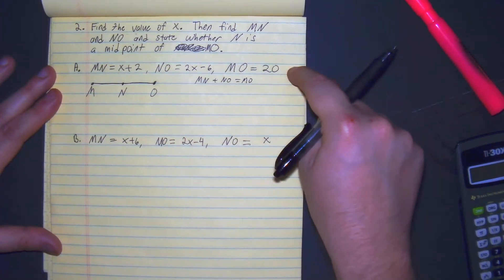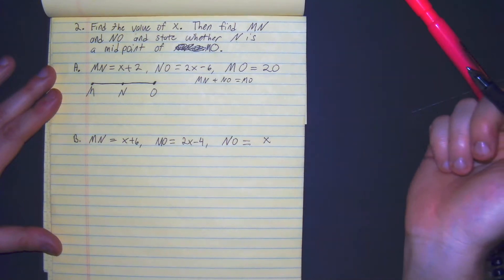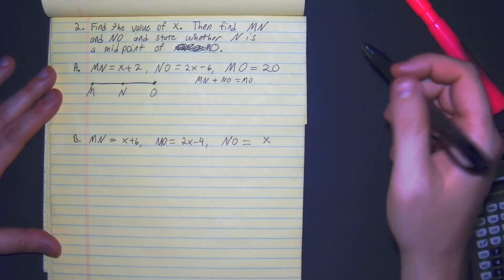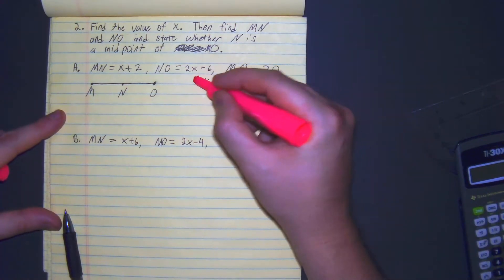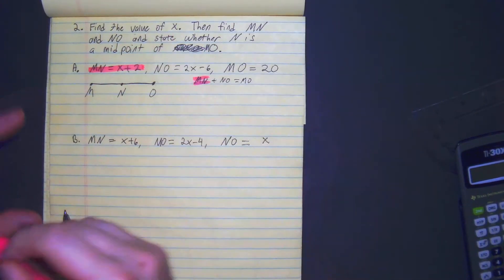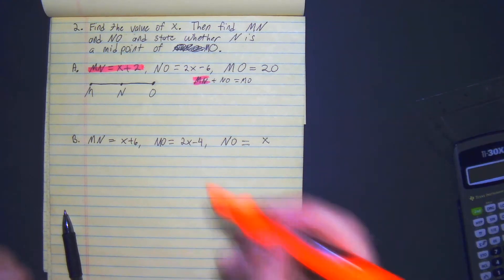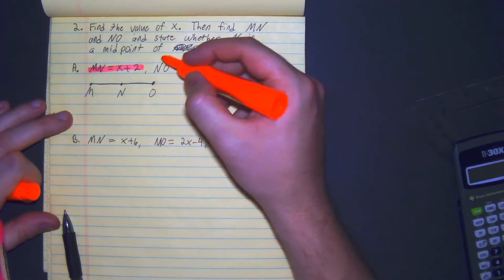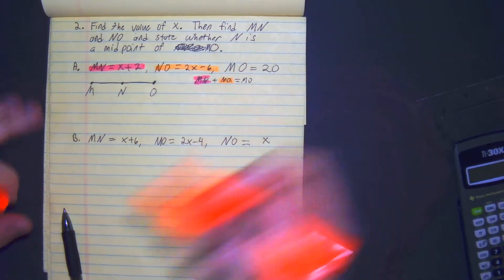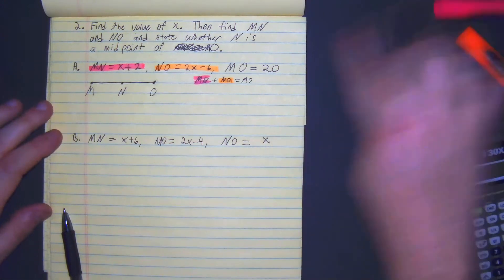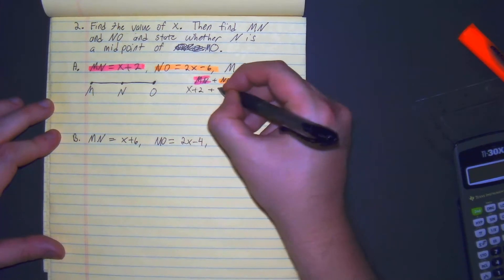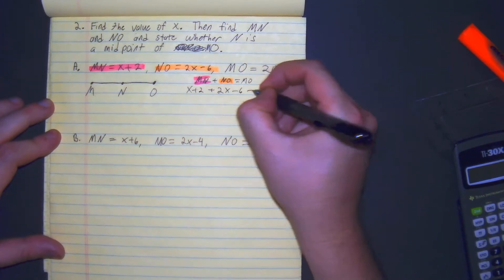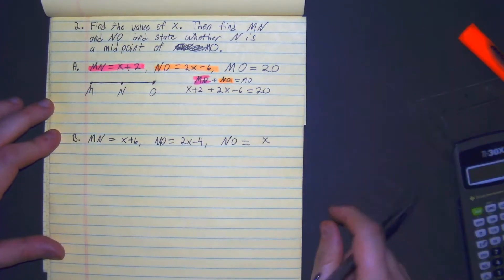And I'm going to use these values. So what we have here, we're going to plug in these given values. So we have x plus 2 plus 2x minus 6 equals 20.